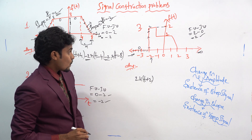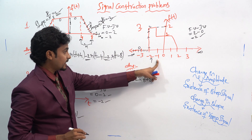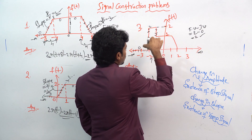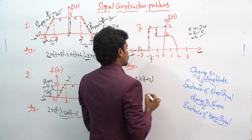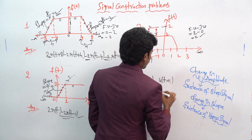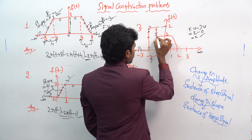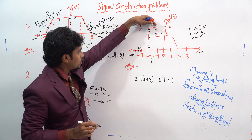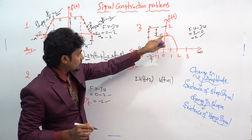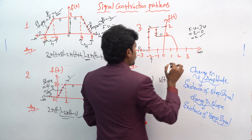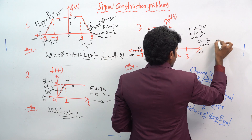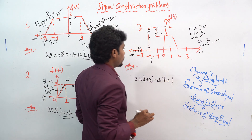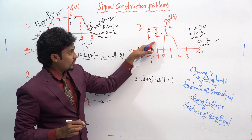Next, at t = −1, the amplitude gets decreasing — there is a decrease in amplitude, meaning this is u(t + 1). The constant here is zero. From the value of 2 it decreases, so the initial value is 2 and the final value gives final minus initial = 0 minus 2 = −2, giving −2·u(t + 1).